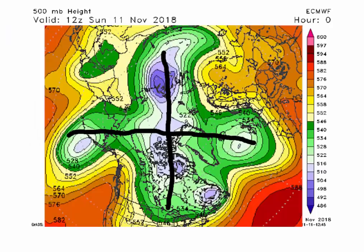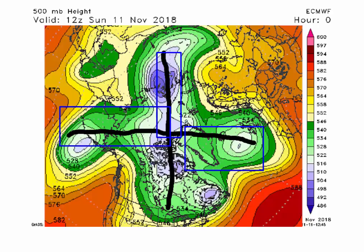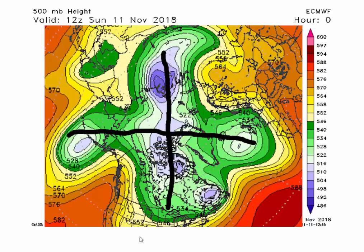First, let's take a look at the overall hemispheric pattern as of Sunday midday, November 11th. What we have is a four-way pattern. You can clearly see four distinct troughs here, very nicely shown — one here, one here, one here, and one down this way. It's a very stable pattern. You also have this block over Scandinavia, which is going to be a feature we'll talk about a little later. It's a four-way, very active pattern, and that's going to continue.